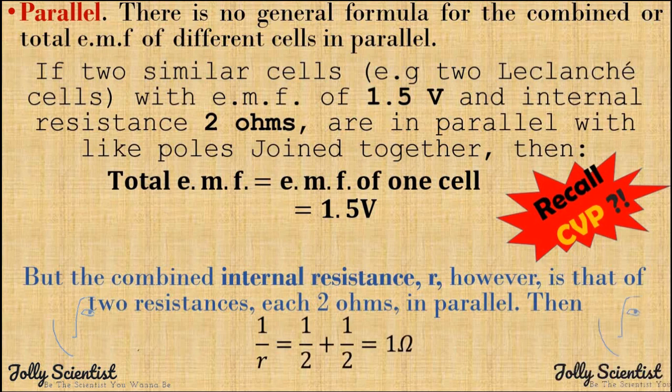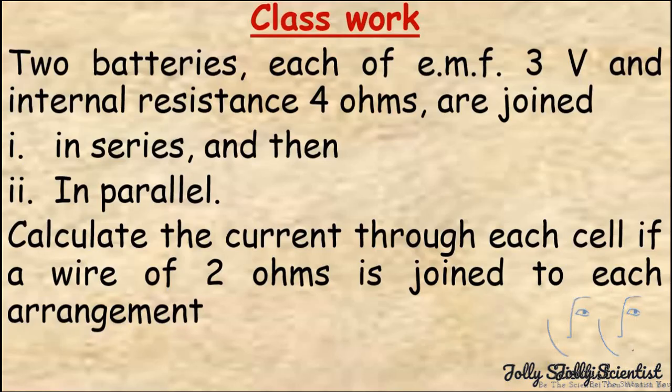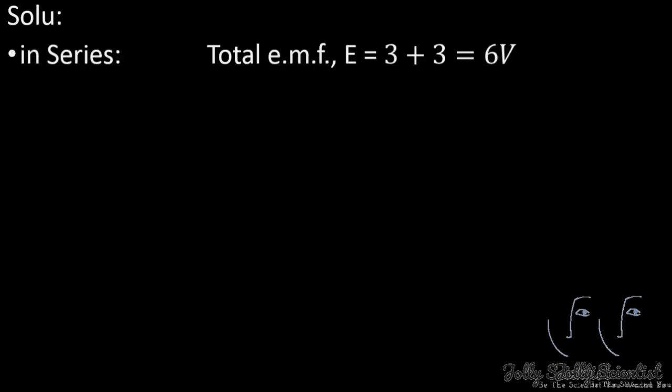The combined internal resistance R is that of two resistances each of 2Ω in parallel, so 1 over R equals 1 over R1 plus 1 over R2, giving 1Ω. Problem: Two batteries each of EMF 3V and internal resistance 4Ω are joined in series and then in parallel. Calculate the current through each cell if a wire of 2Ω is connected to each arrangement.